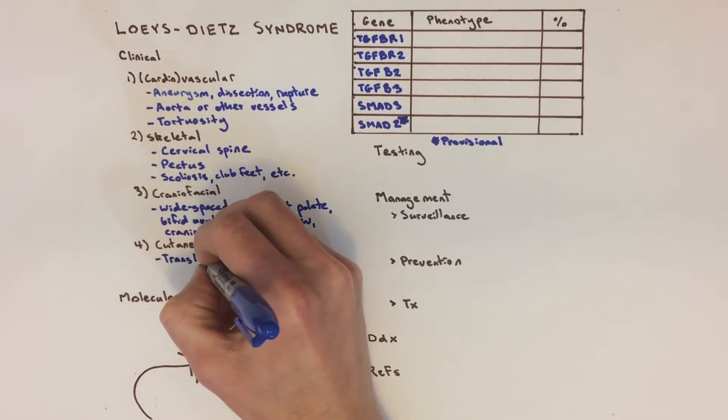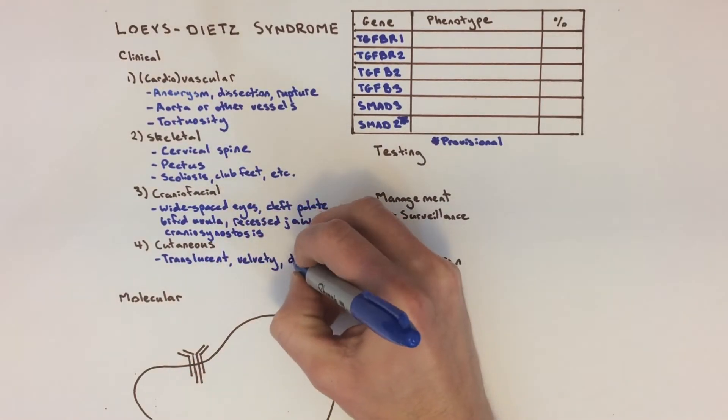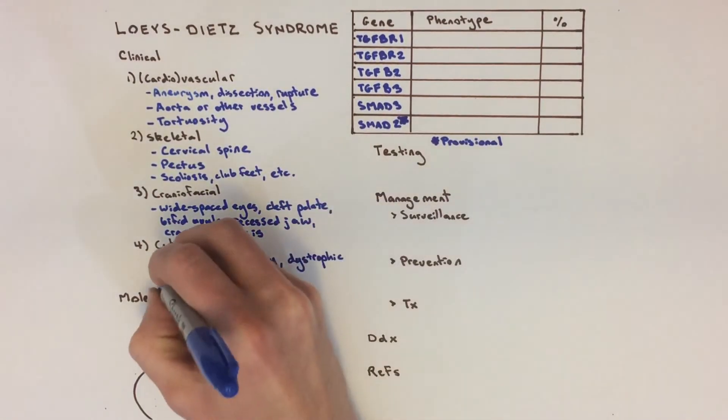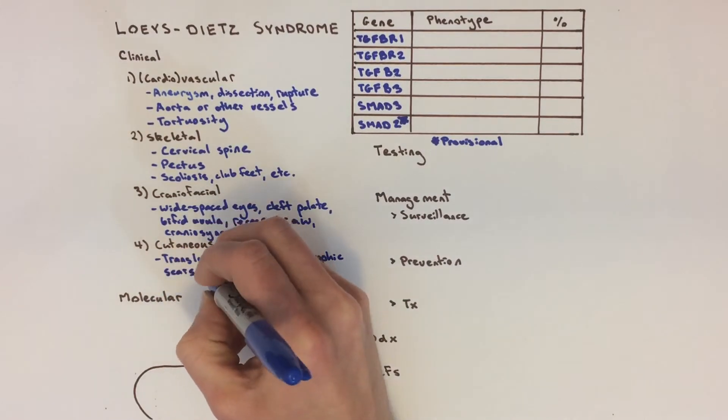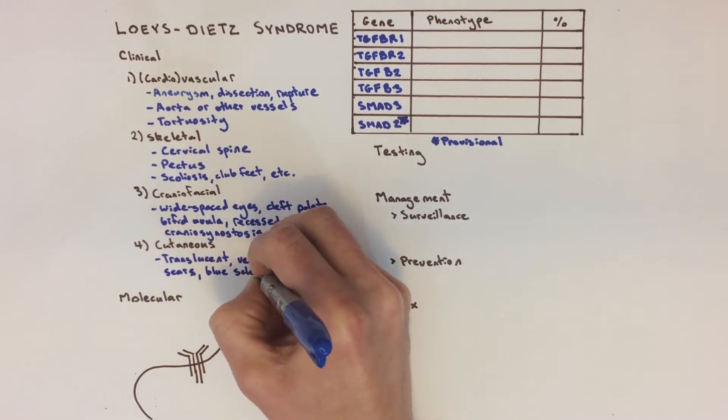Cutaneous features of Loeys-Dietz can include translucent, velvety skin, easy bruising, altered wound healing that causes dystrophic scars, and a blue coloring of the sclera because of altered connective tissue there.